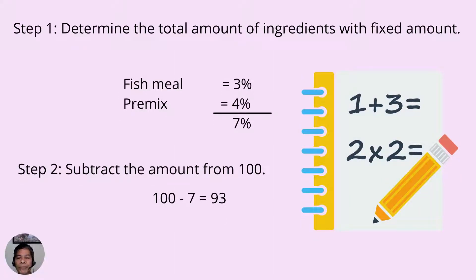The first step is to determine the total amount of ingredients with the fixed amount. So we will write down fish meal with the amount of 3% and premix with 4% inclusion. Get the sum of these two ingredients and you will get 7%. Then subtract 7% from 100 to get 93.